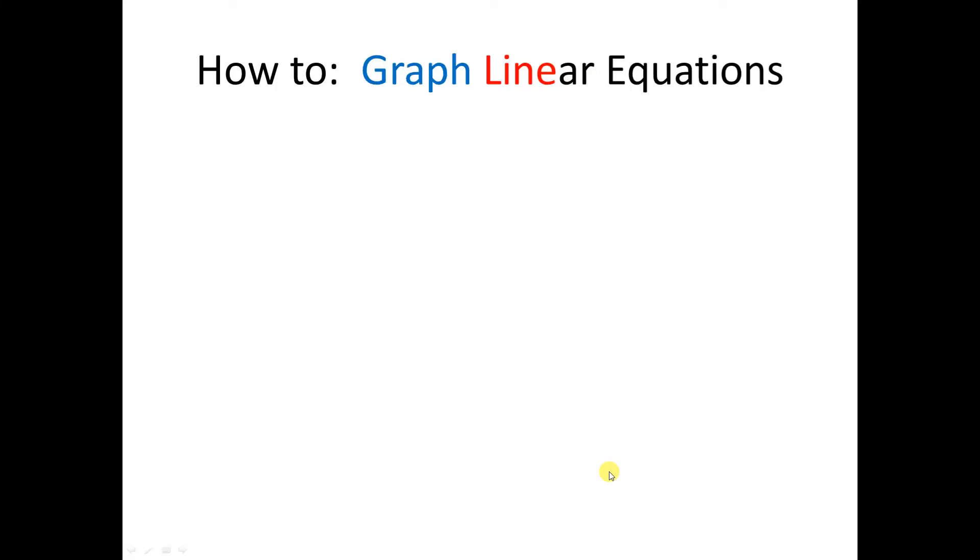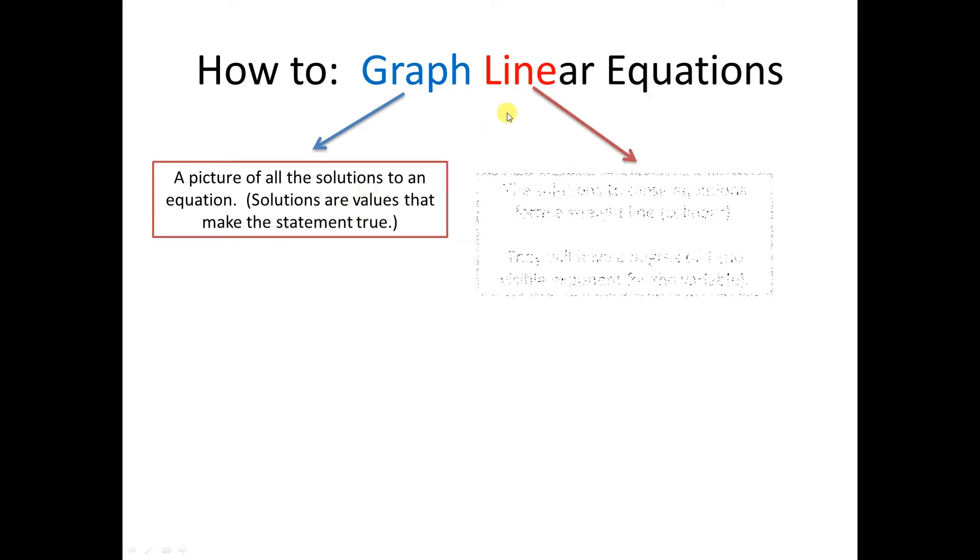Now we're going to learn how to graph a linear equation. A graph is a picture of all answers to an equation, and it turns out that the equations that are linear, their solutions when you plot them, they make a line. So they're called linear equations because all of their answers line up together. Now one way you can tell if it's a linear equation without the graph is if you do not see an exponent. That means it would have an exponent of 1, linear.